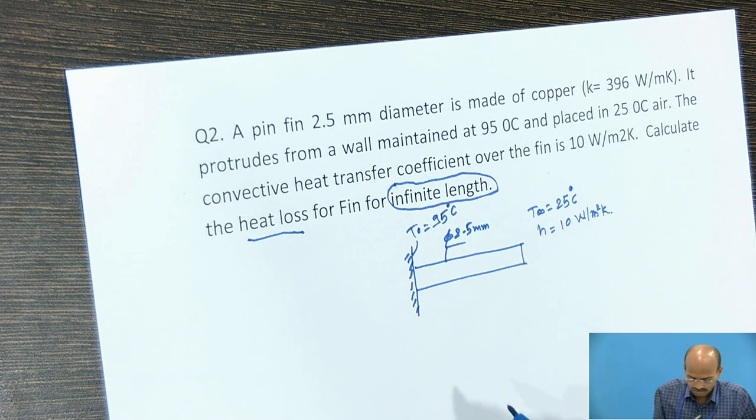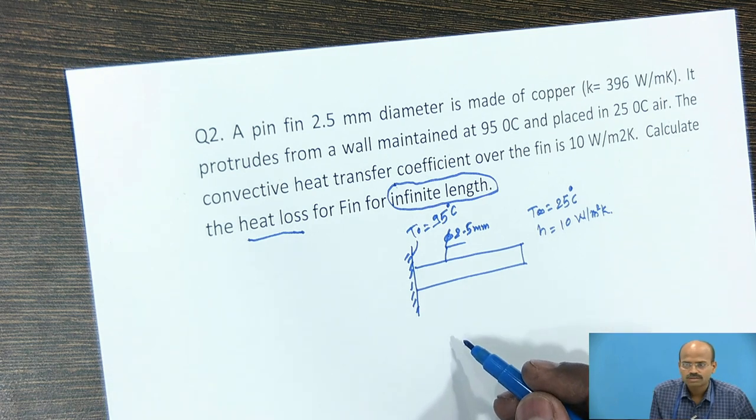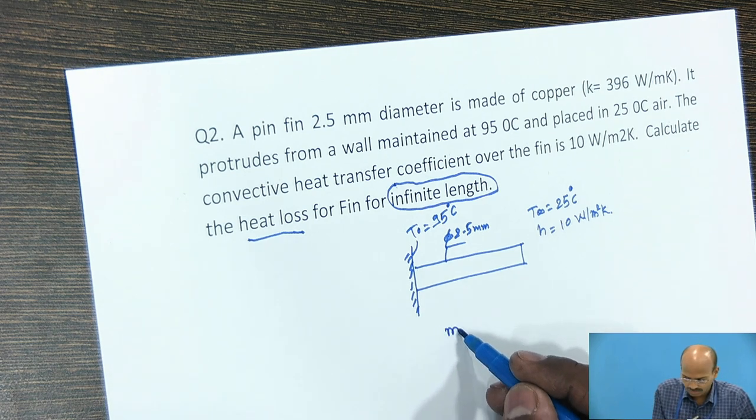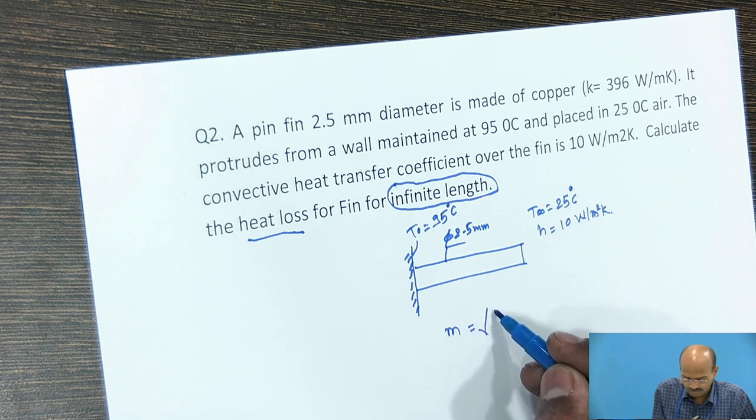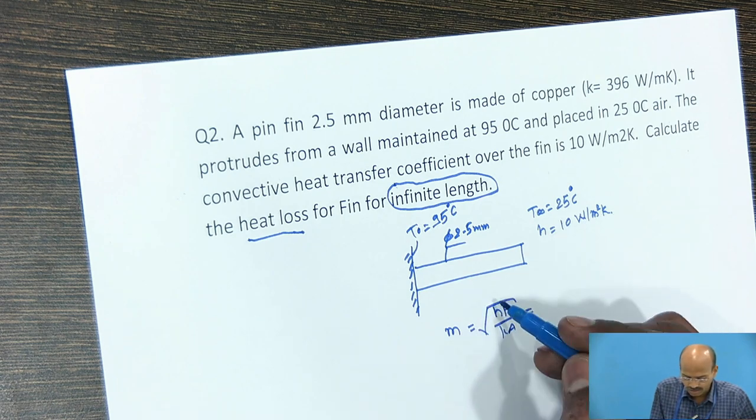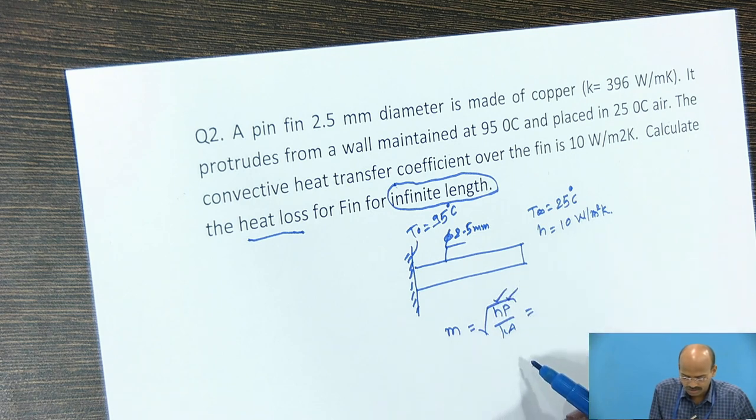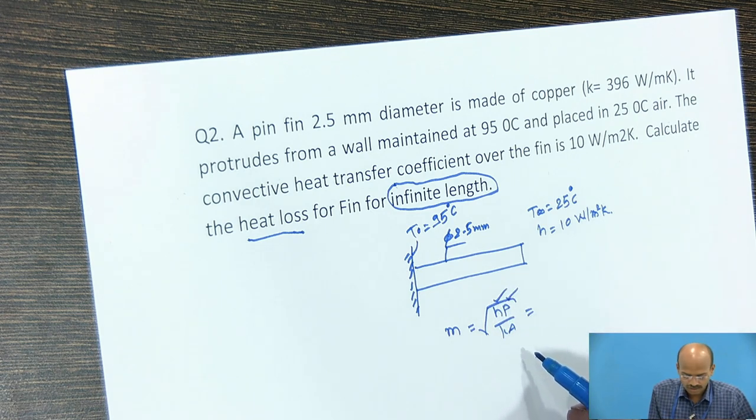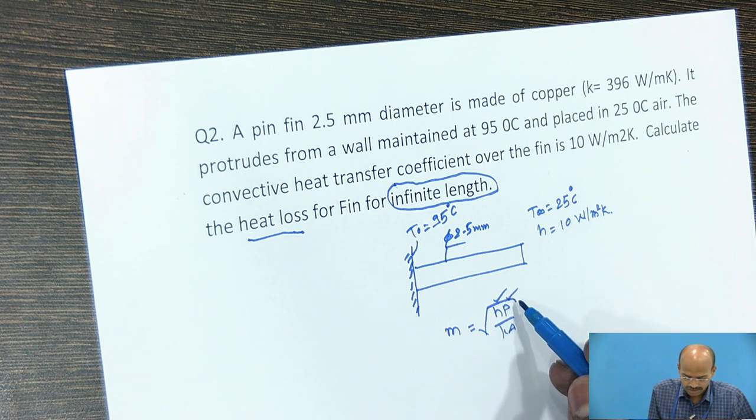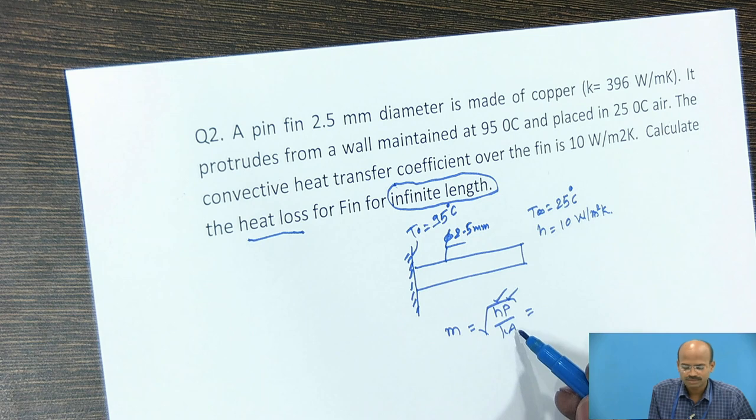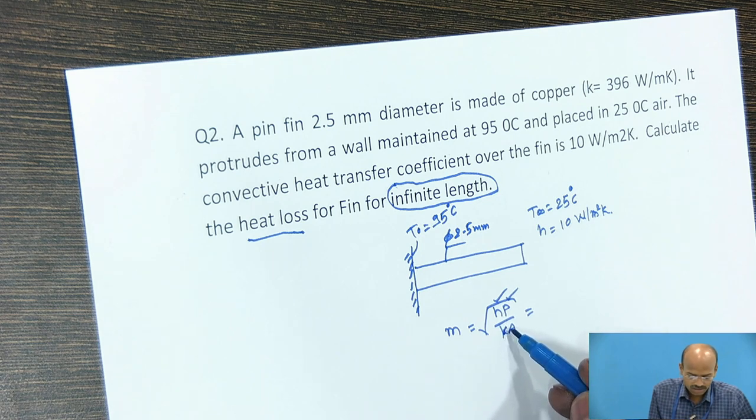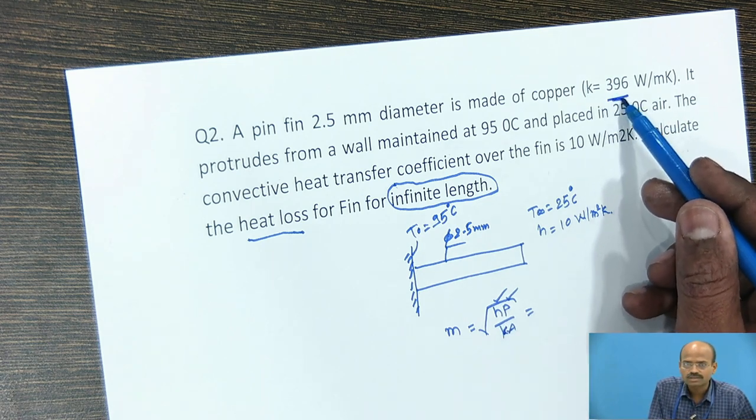Now first we find out the M, which is equal to square root of HP by KA. Perimeter is pi D into L. A, perimeter pi D square by 4. K conductivity is 396.